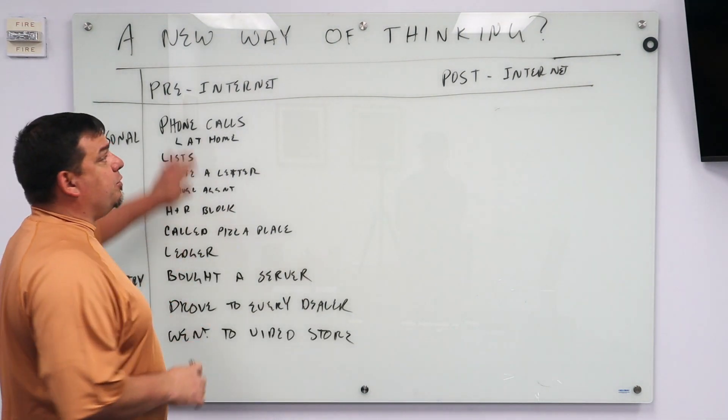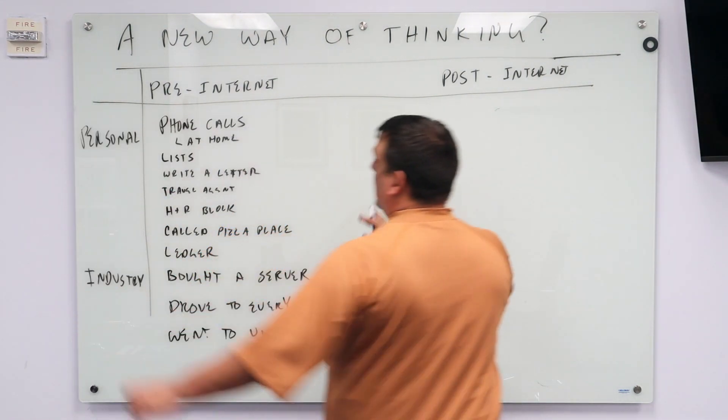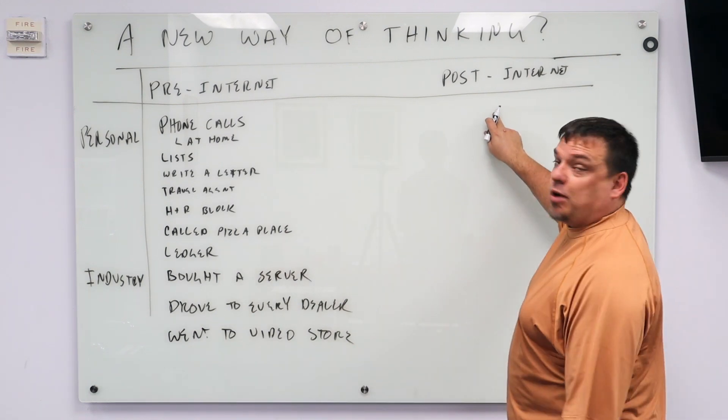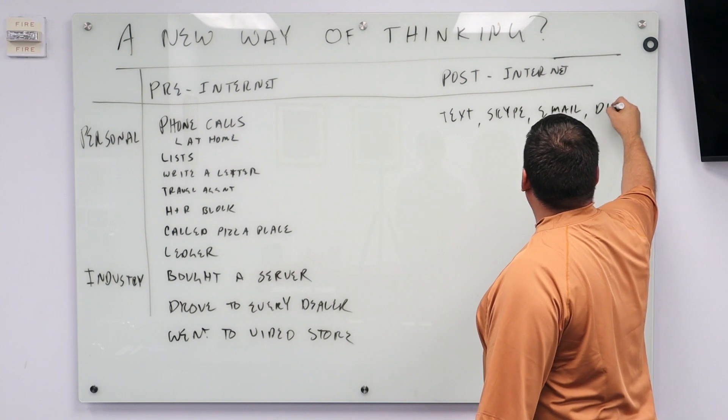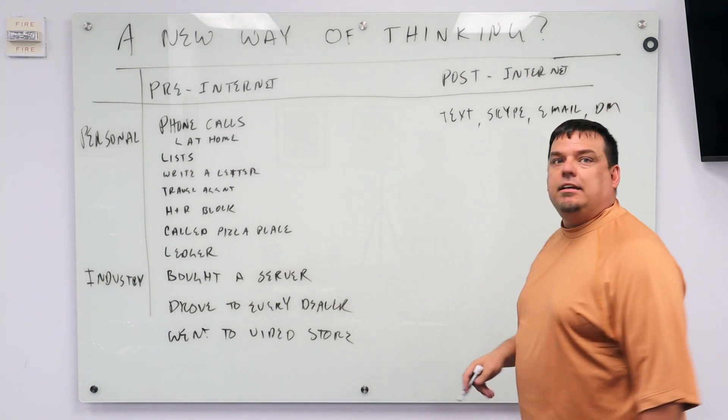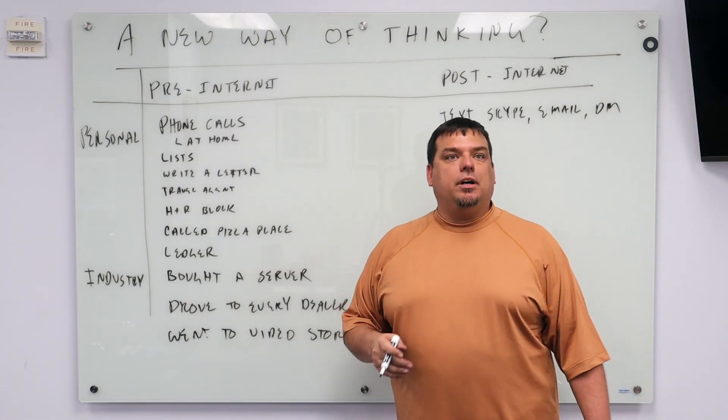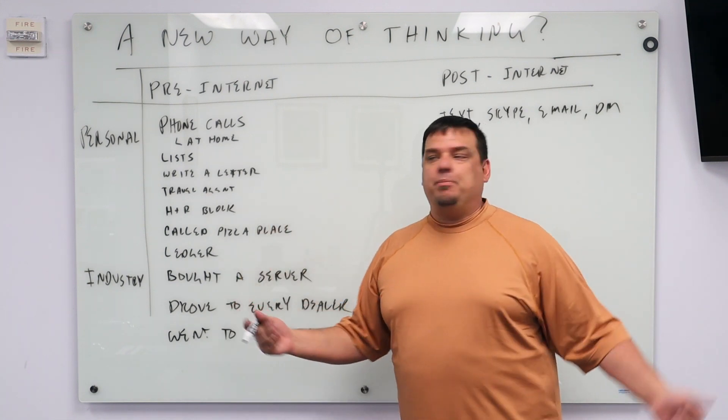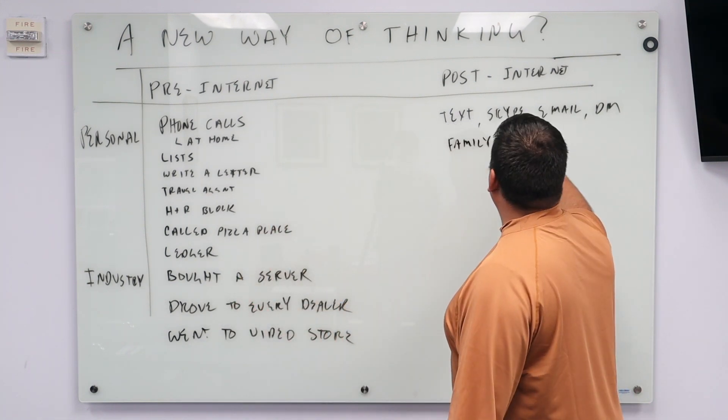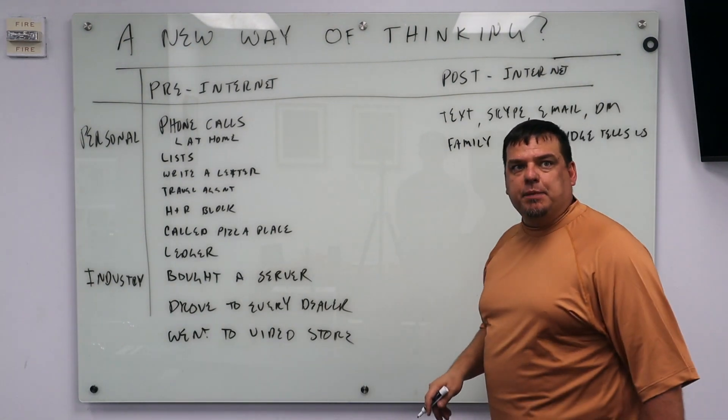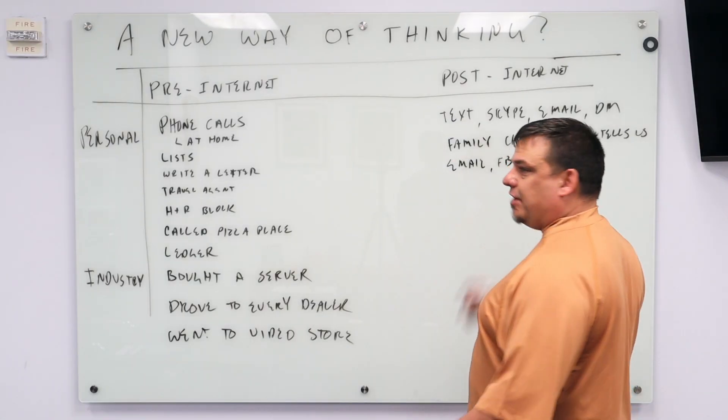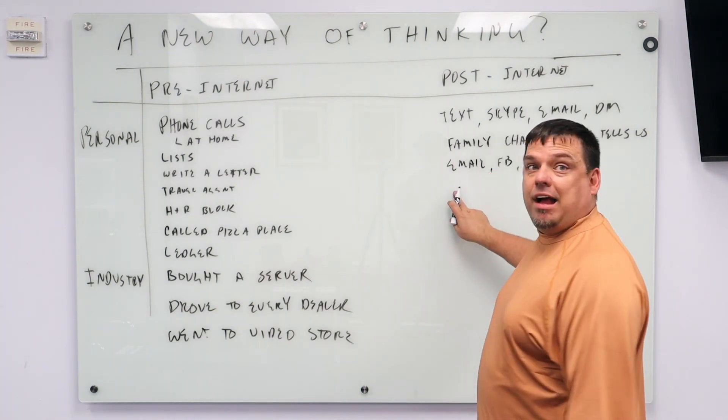These are all the things that we did in the pre-internet days, in our personal lives. What do we do today? How do we talk to our mom? We text, we Skype, we email, DM. How do we communicate that your mom needs you to pick up milk or needs someone to pick up milk? We do family chat, right? Or the fridge tells us. How do you communicate with people? Email, Facebook, forums. How do you find your friends? Online.